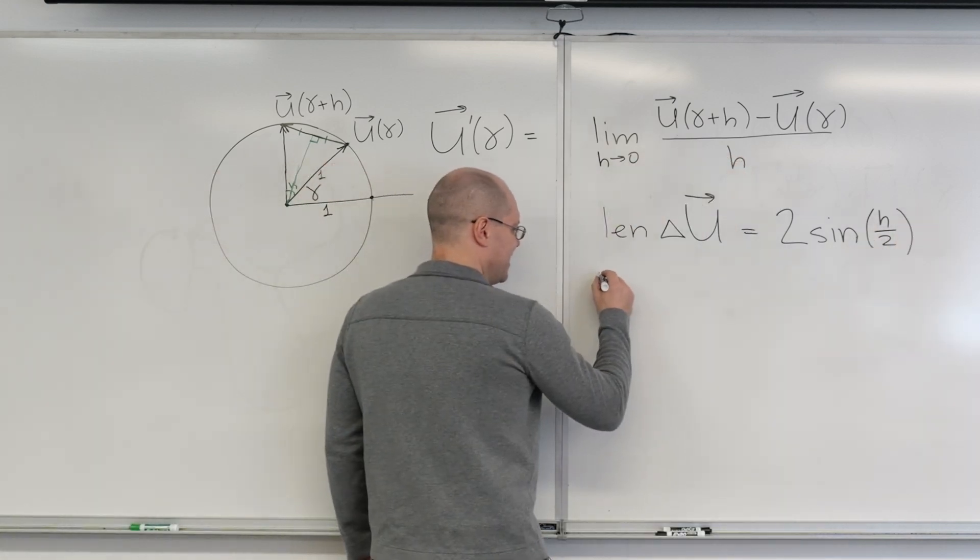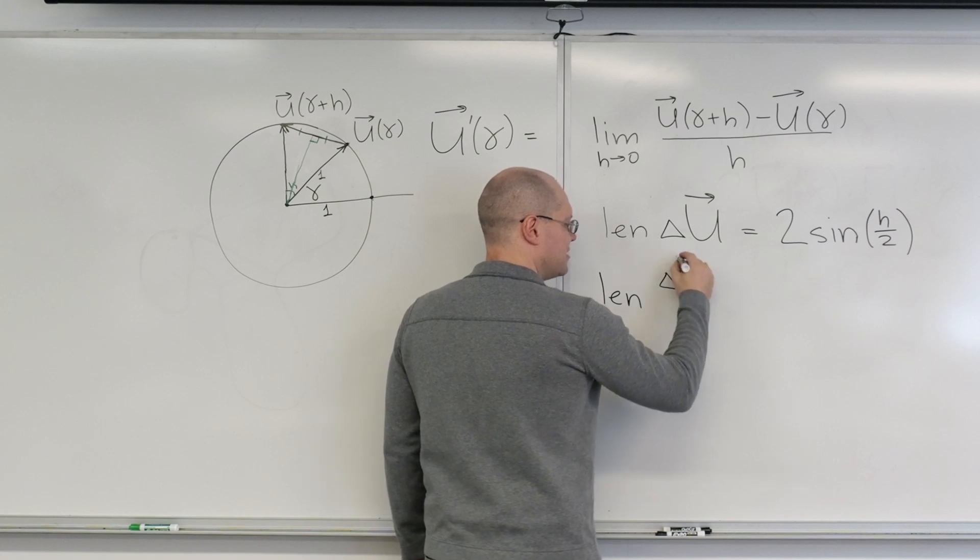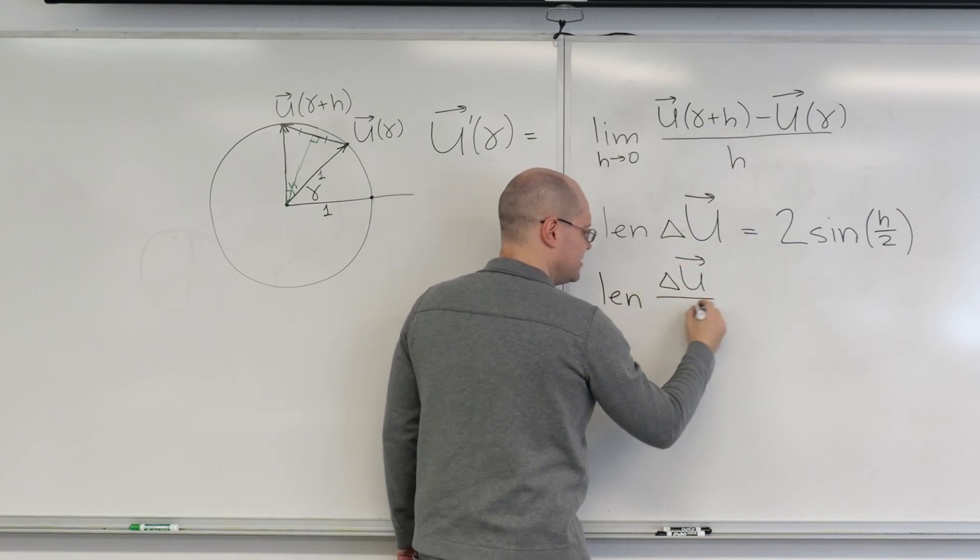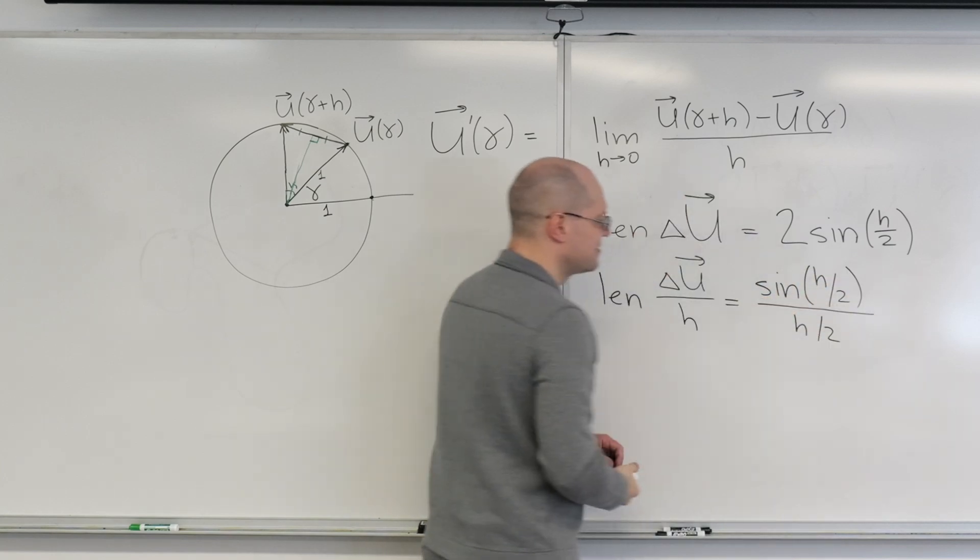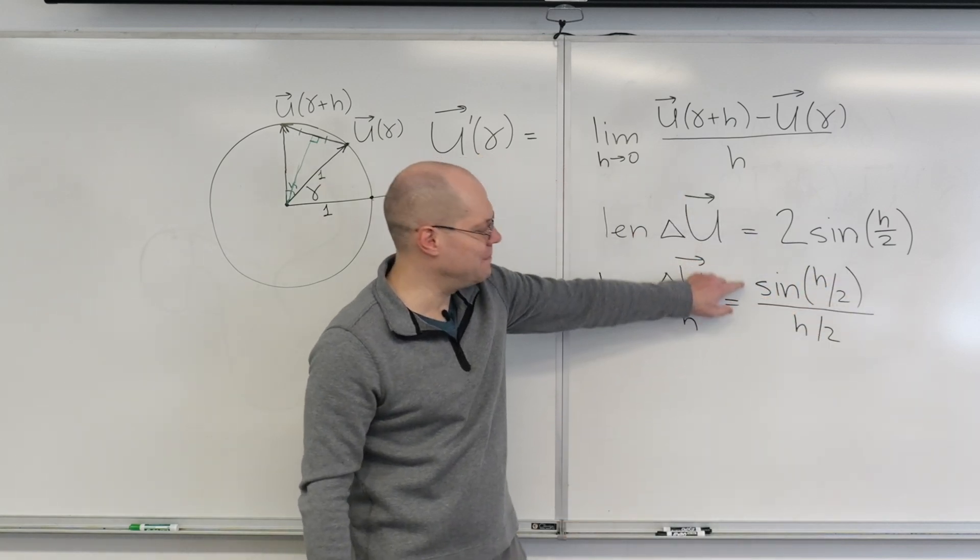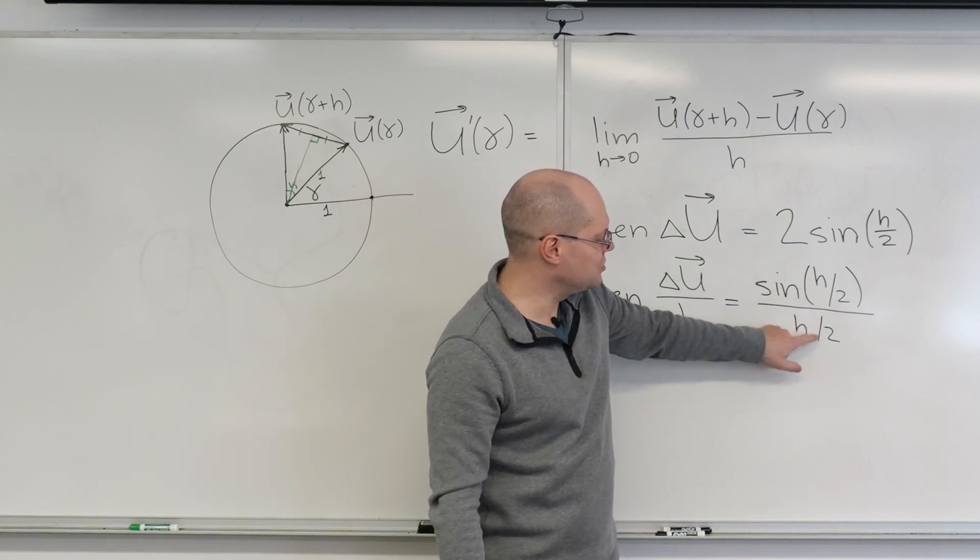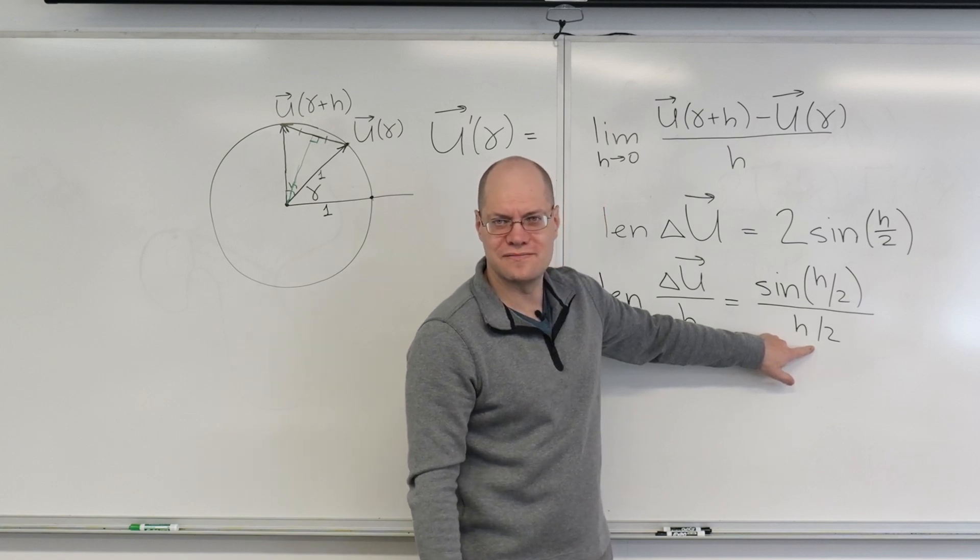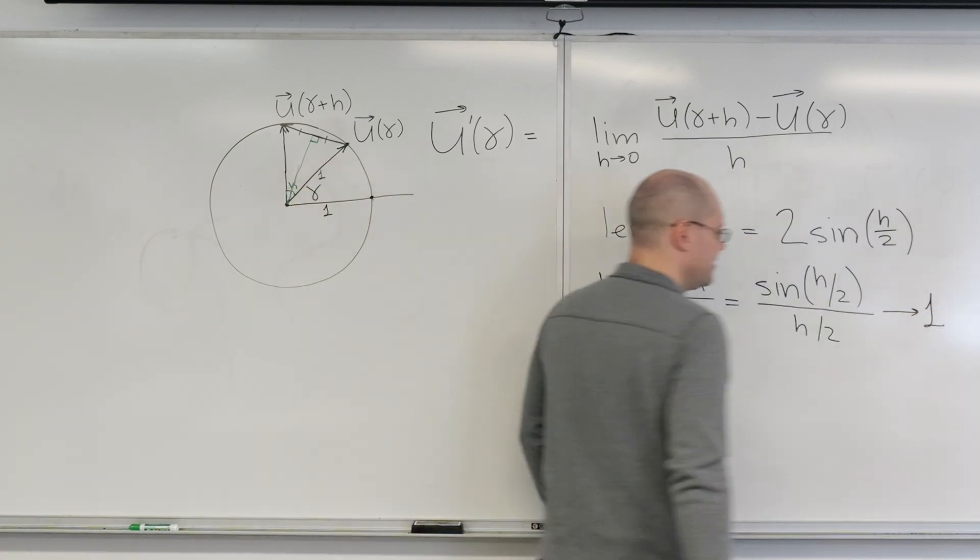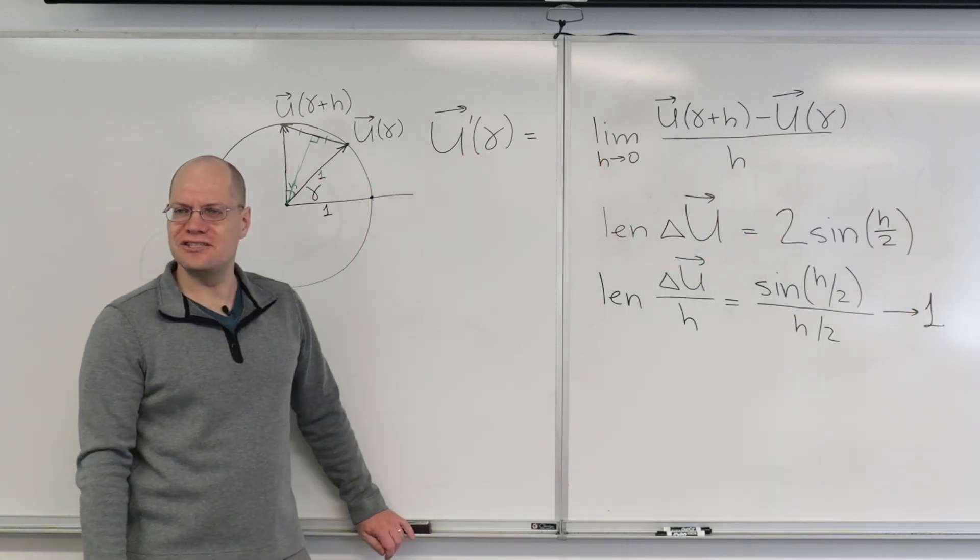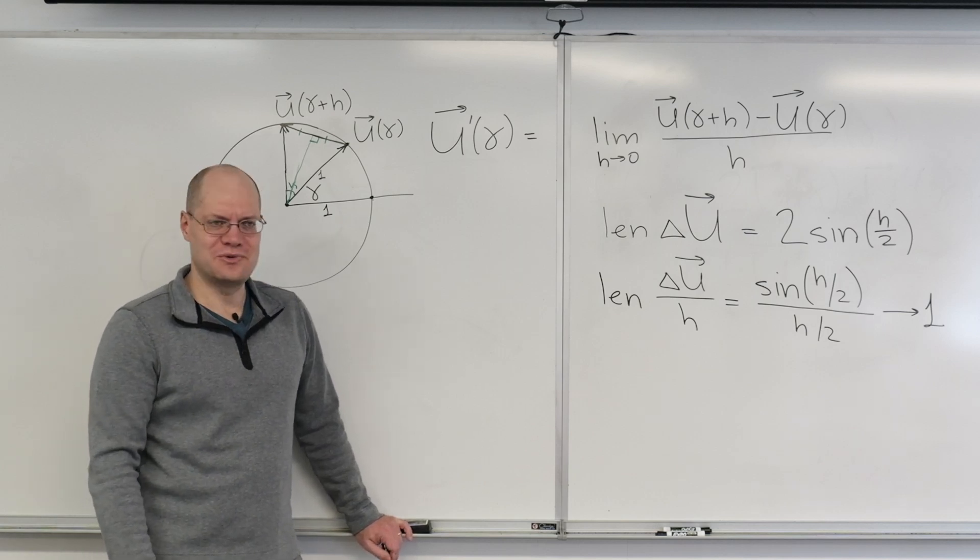So then the length of delta U, which is in the numerator, divided by H, is, instead of putting the two on top, I'll put it in the denominator of the bottom. So I have H over two here and H over two here. And as you know from calculus, this is a classical limit. It approaches one as H goes to zero. It's sine of X over X. You're familiar with the limit? So that approaches one.